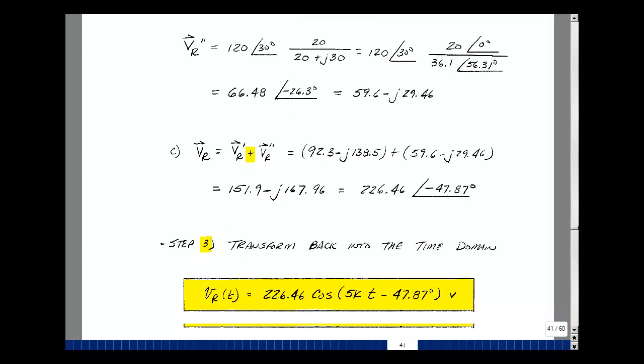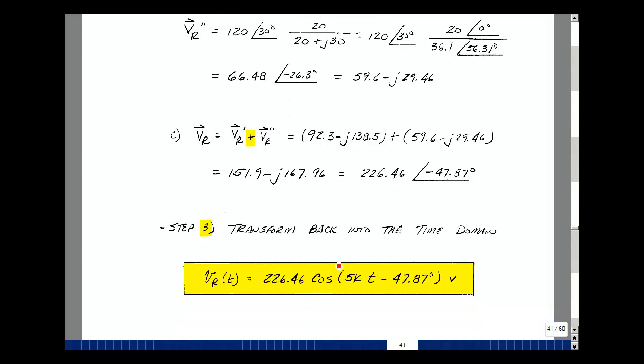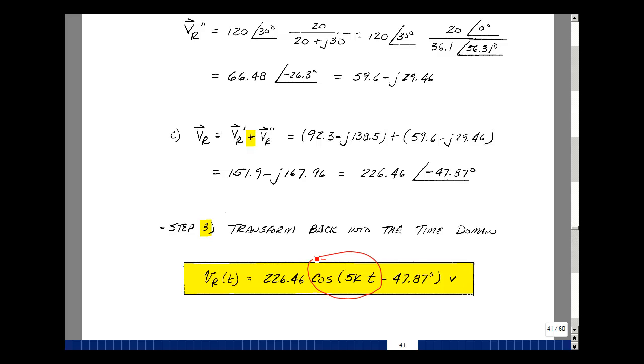Now to transform back into the time domain as our last step, what we're going to do is put the cosine of omega t between the magnitude and the angle. So our answer then is 226.46 cosine of the quantity 5,000 times t minus 47.87, and the units are volts. This is an example that uses superposition.